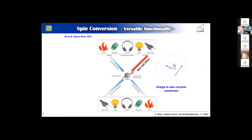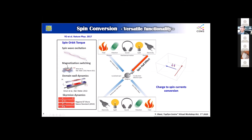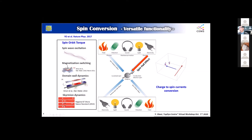This spin current can manipulate — for example, excite spin waves and also switch magnetization back and forth. Of course, we can drive the domain wall, and also more recently we can manipulate topological objects such as skyrmions.